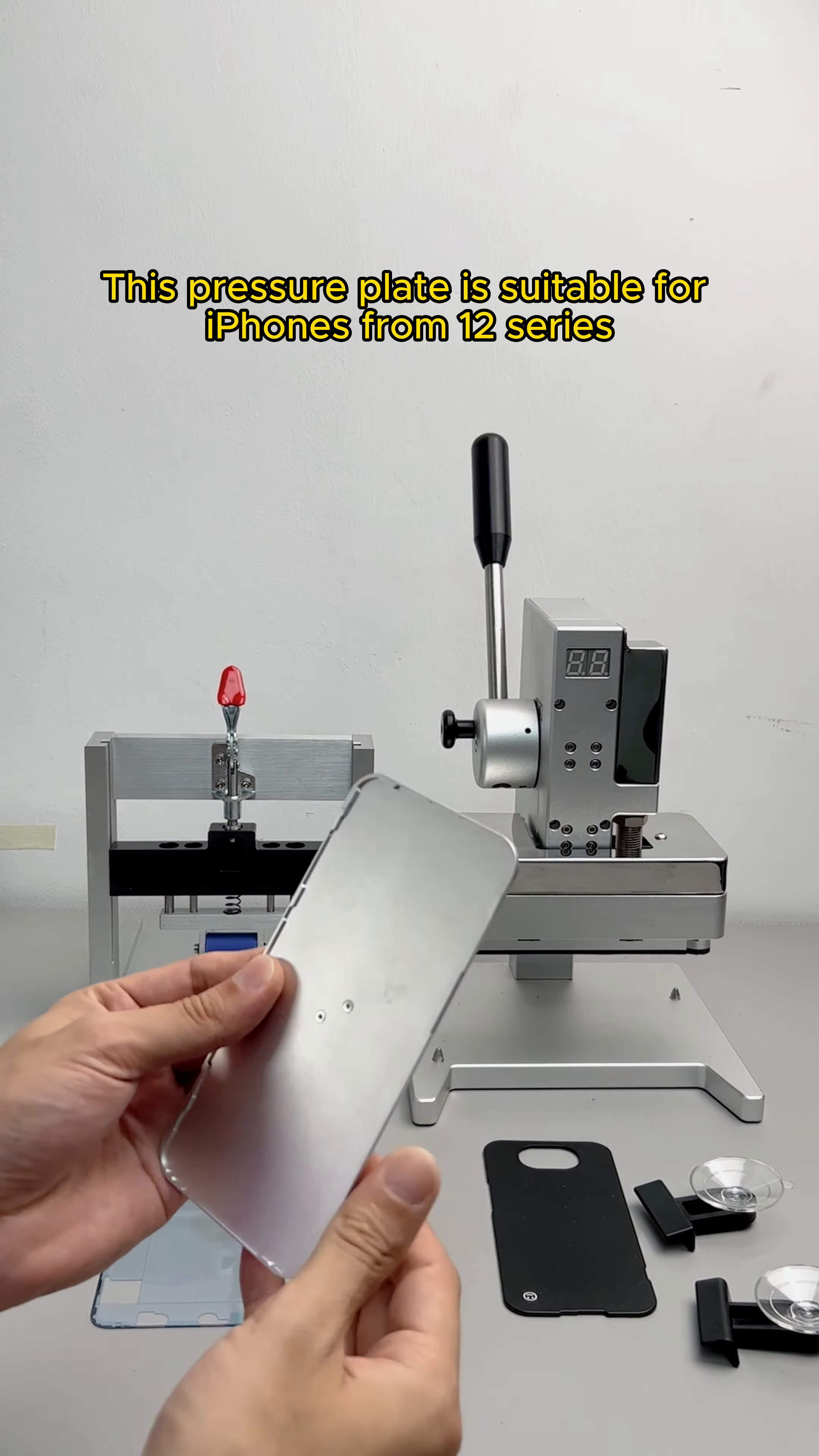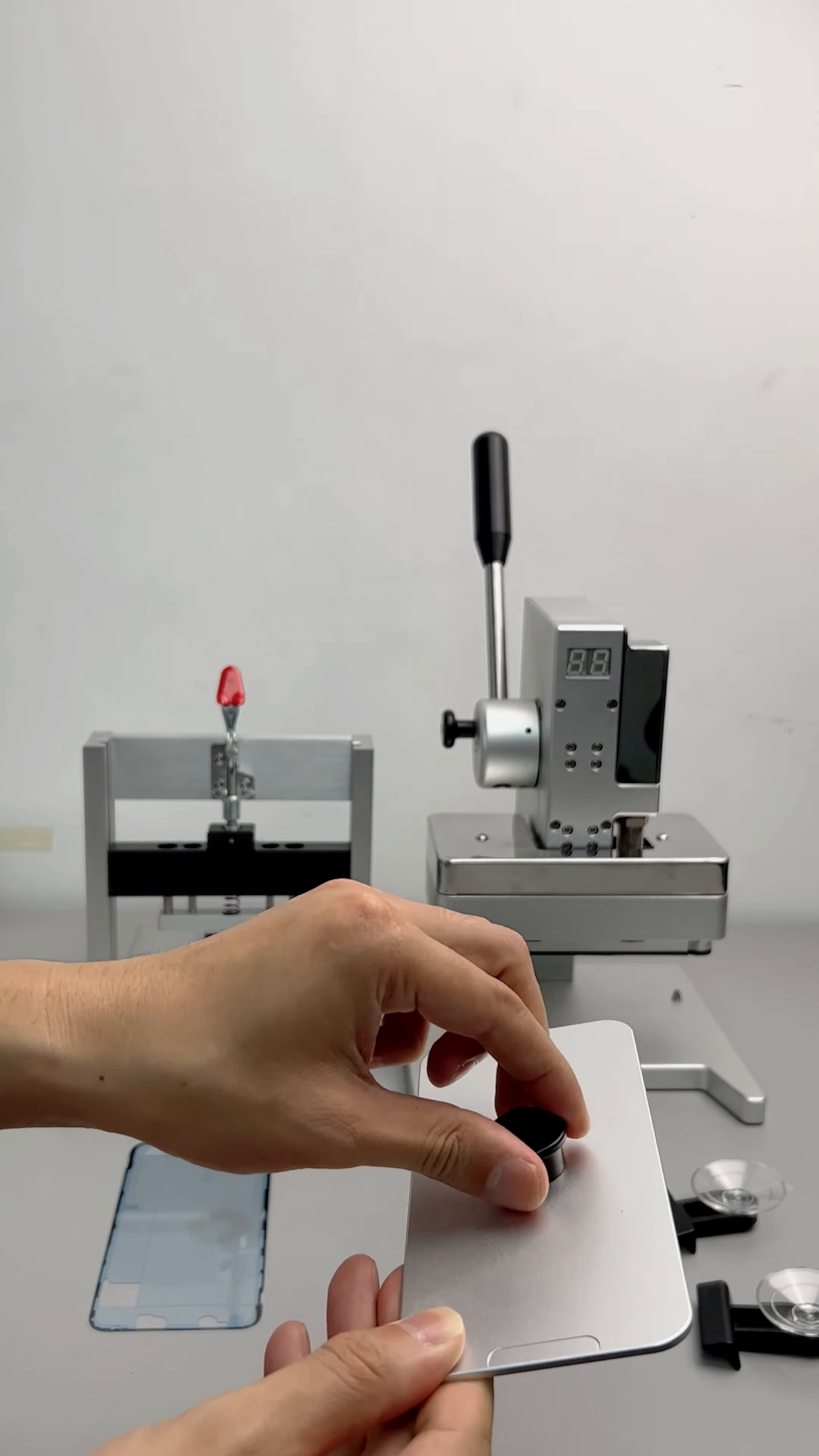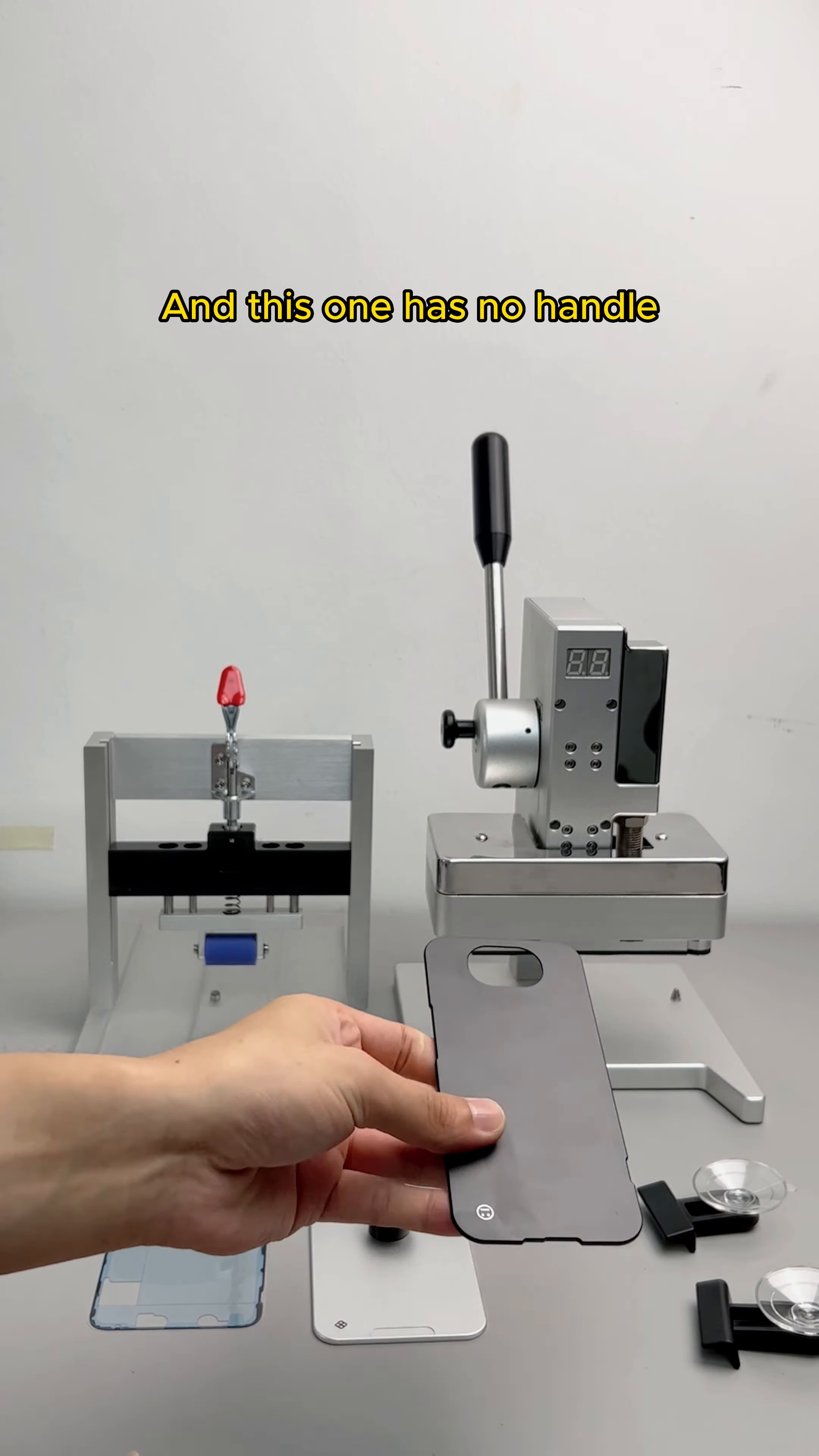This pressure plate is suitable for iPhones from the 12 series and has a handle. This black pressure plate is suitable for iPhones from 13 to 14 series and has no handle.